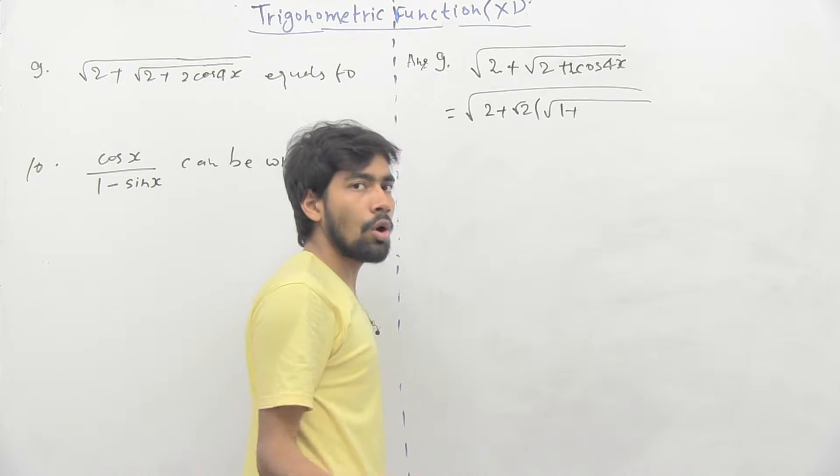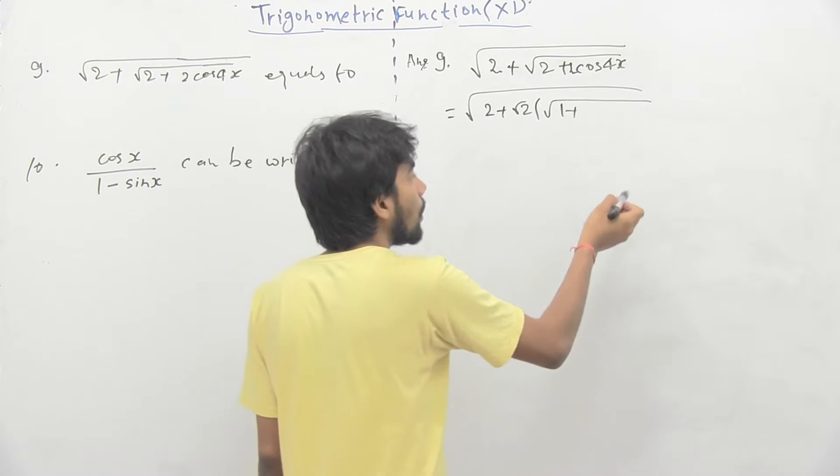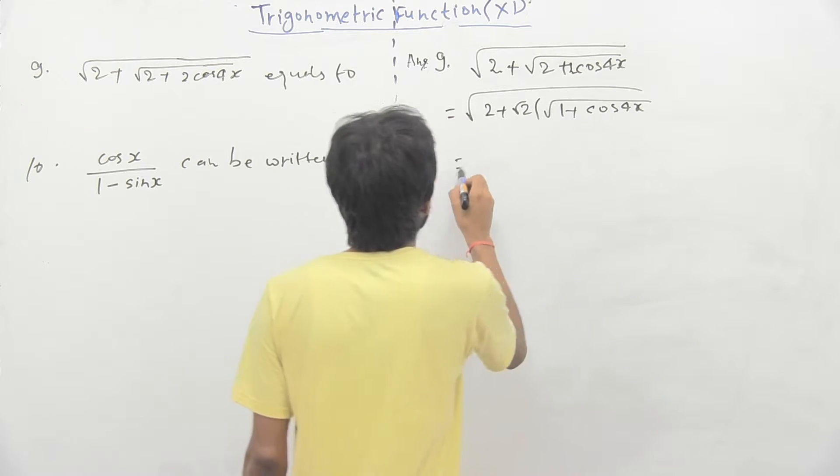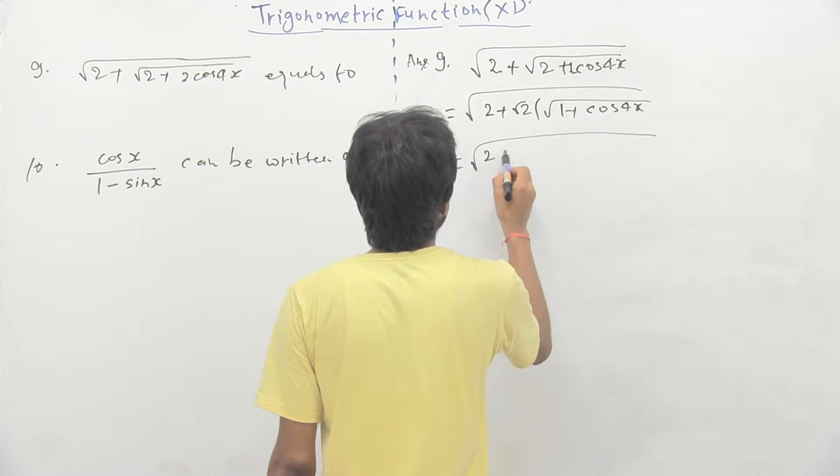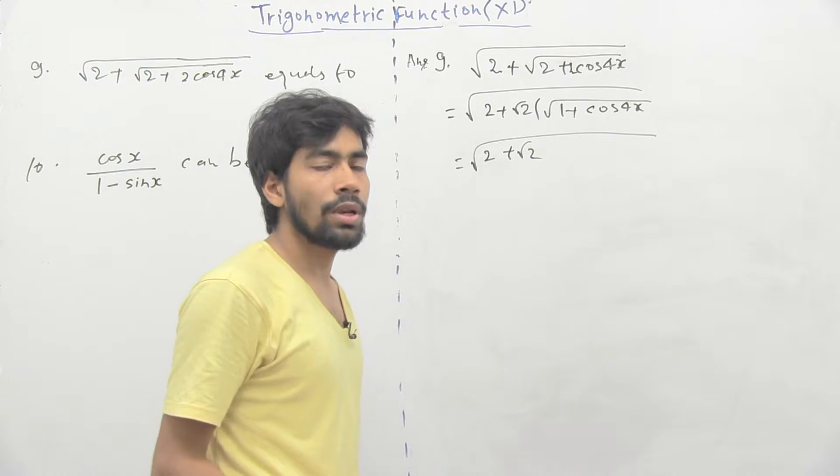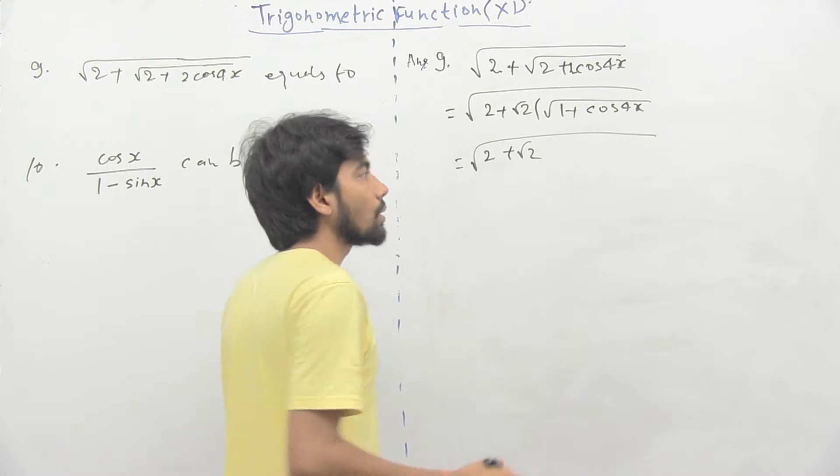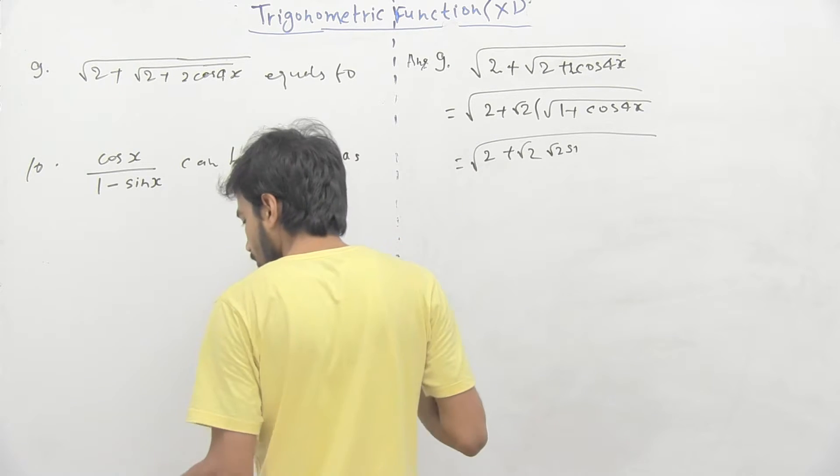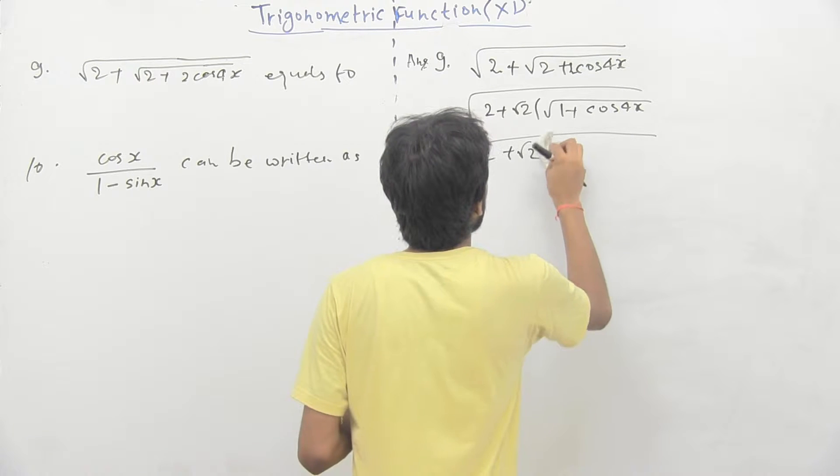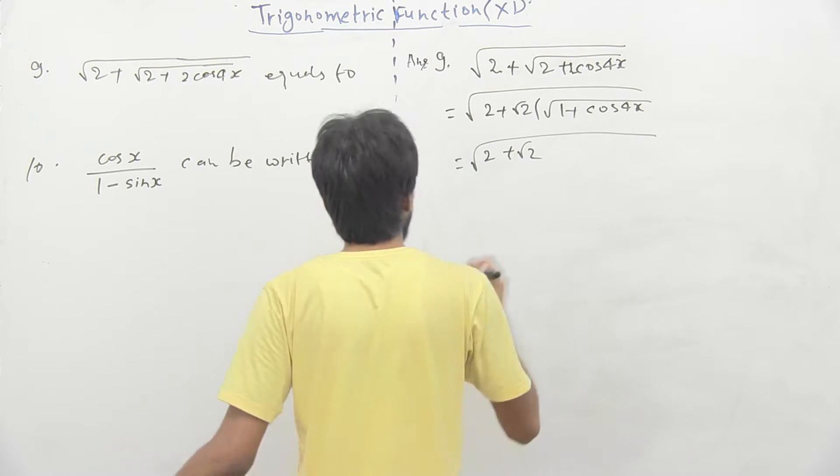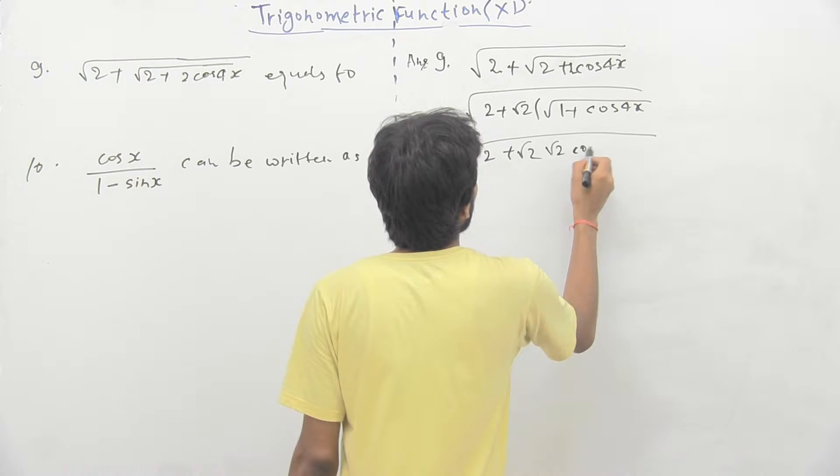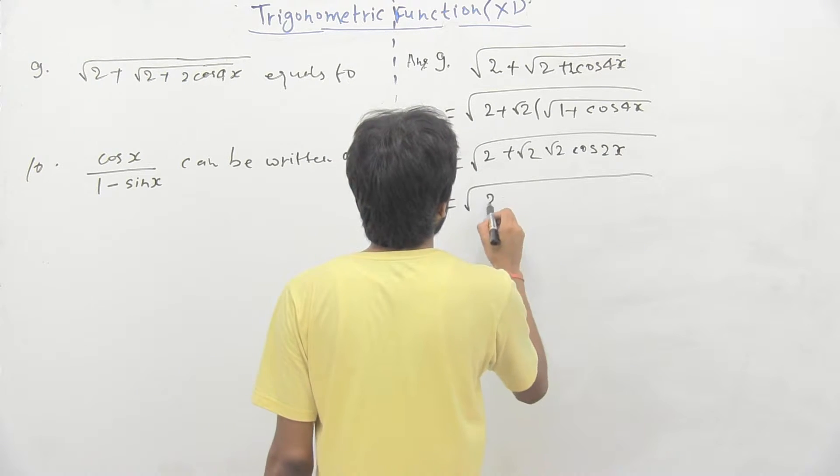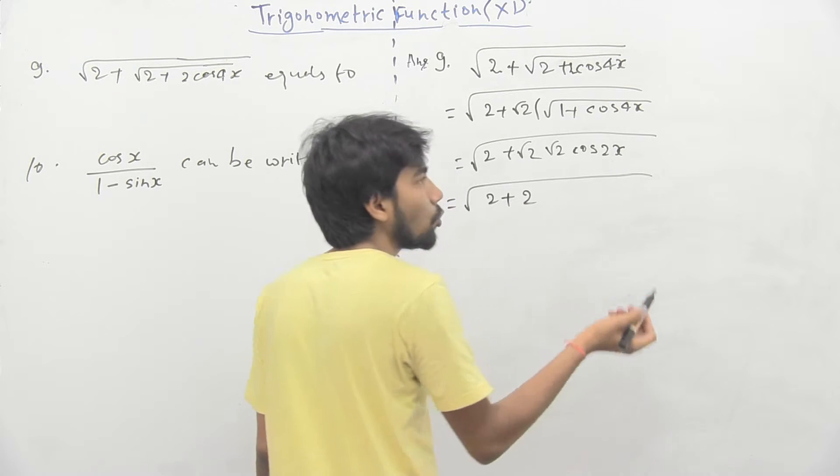So, taking root 2 common, it will give root under root 1 plus cos 4x. And 1 plus cos 4x will give you 2 sin square 2x, sorry 2 cos square 2x, root 2 cos 2x which will now become 2 plus 2 cos 2x.